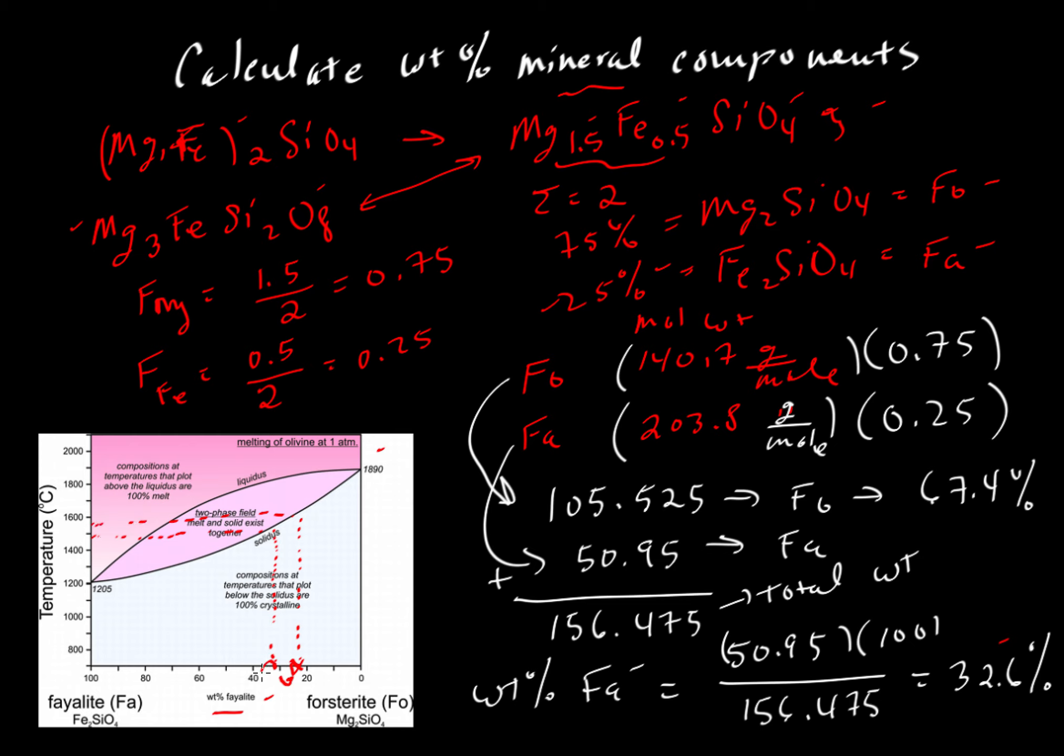The temperature we would get by taking the correct weight percent value is different from what we would have gotten had we incorrectly taken the 25 mole percent and plotted it on this weight percent fayalite scale. When doing these calculations, it's very important to look at what kind of scale is used. Both molecular percents and weight percents are used, so make sure you're plotting the right one if you want to estimate a melting or vaporization temperature.